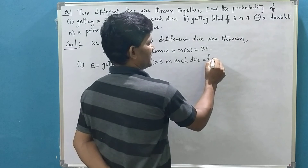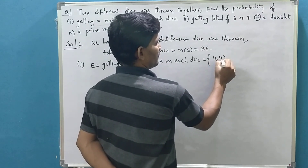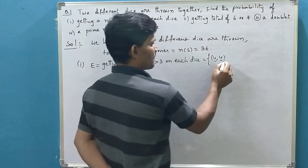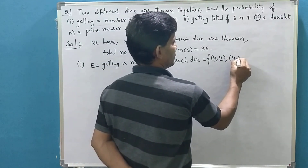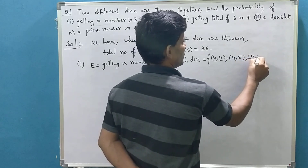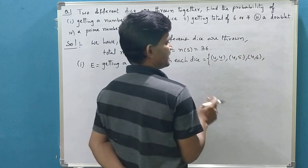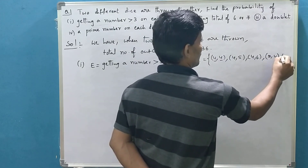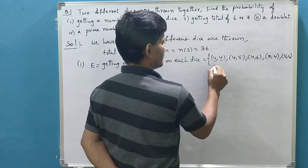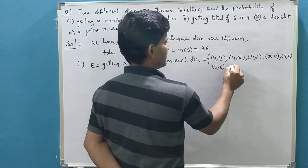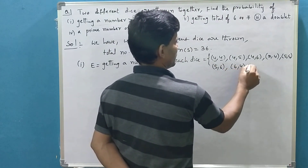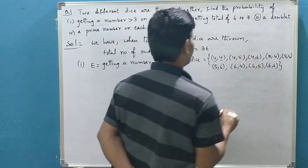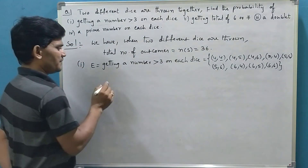Greater than 3 means 4, 5, or 6. So the favorable outcomes are: (4,4), (4,5), (4,6), (5,4), (5,5), (5,6), (6,4), (6,5), and (6,6) — all numbers greater than 3 on both dice. So these are the favorable outcomes for this event.